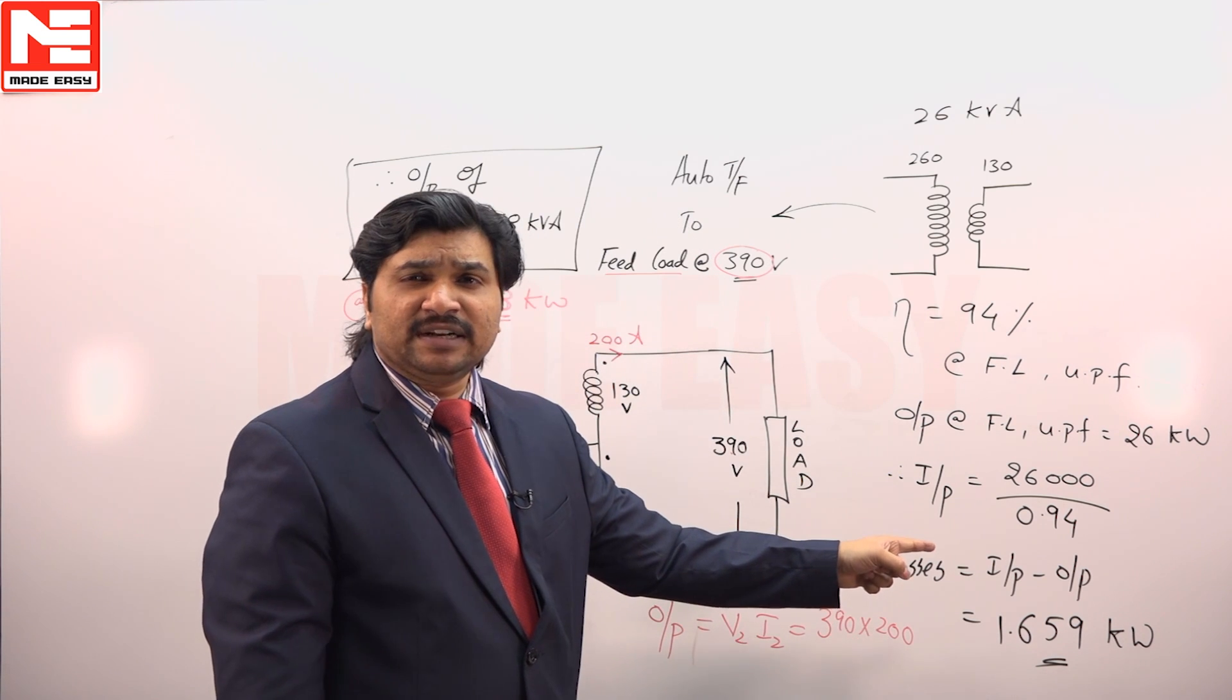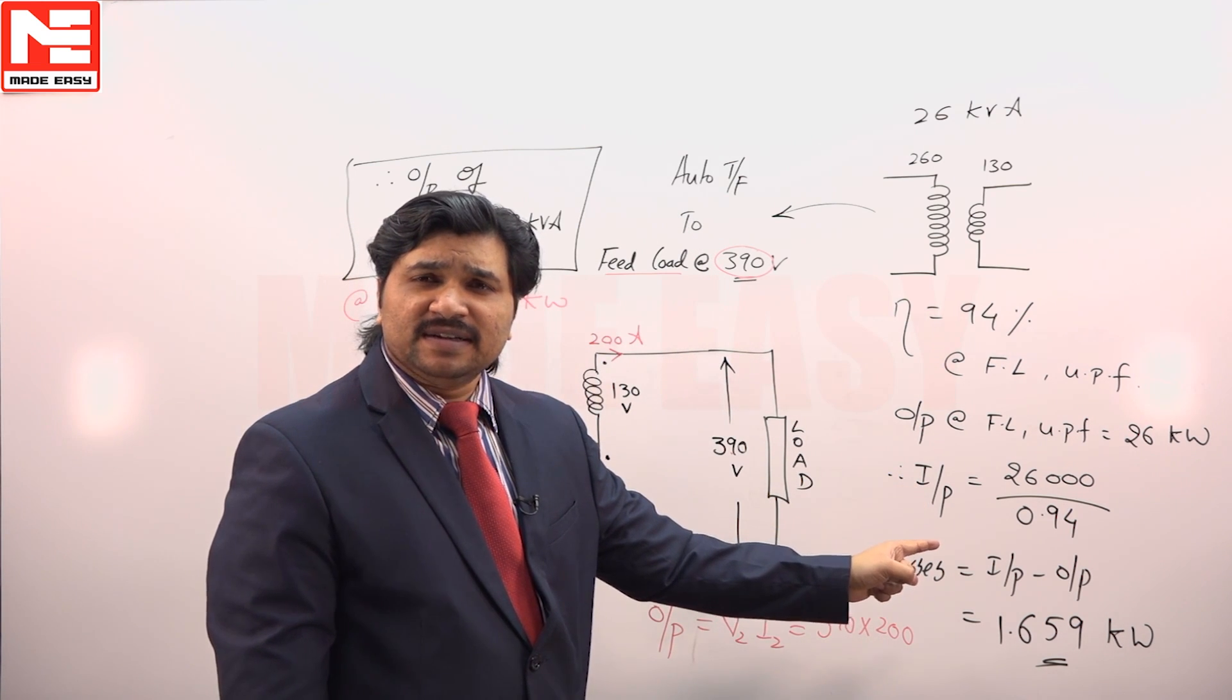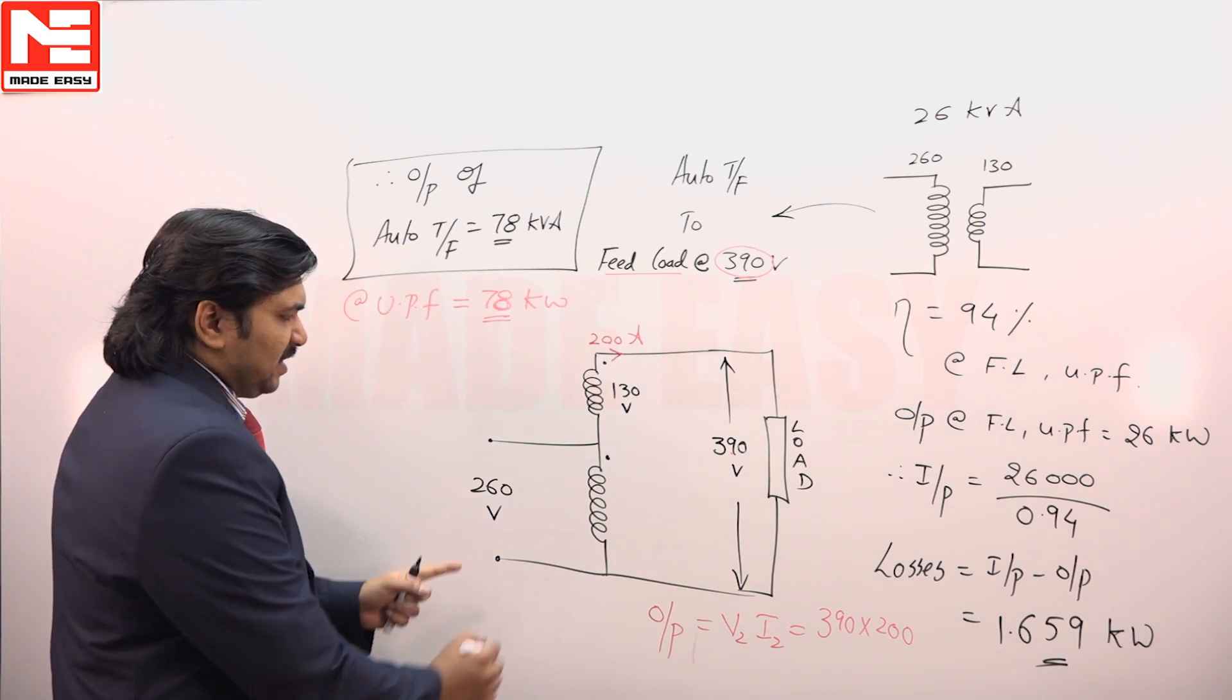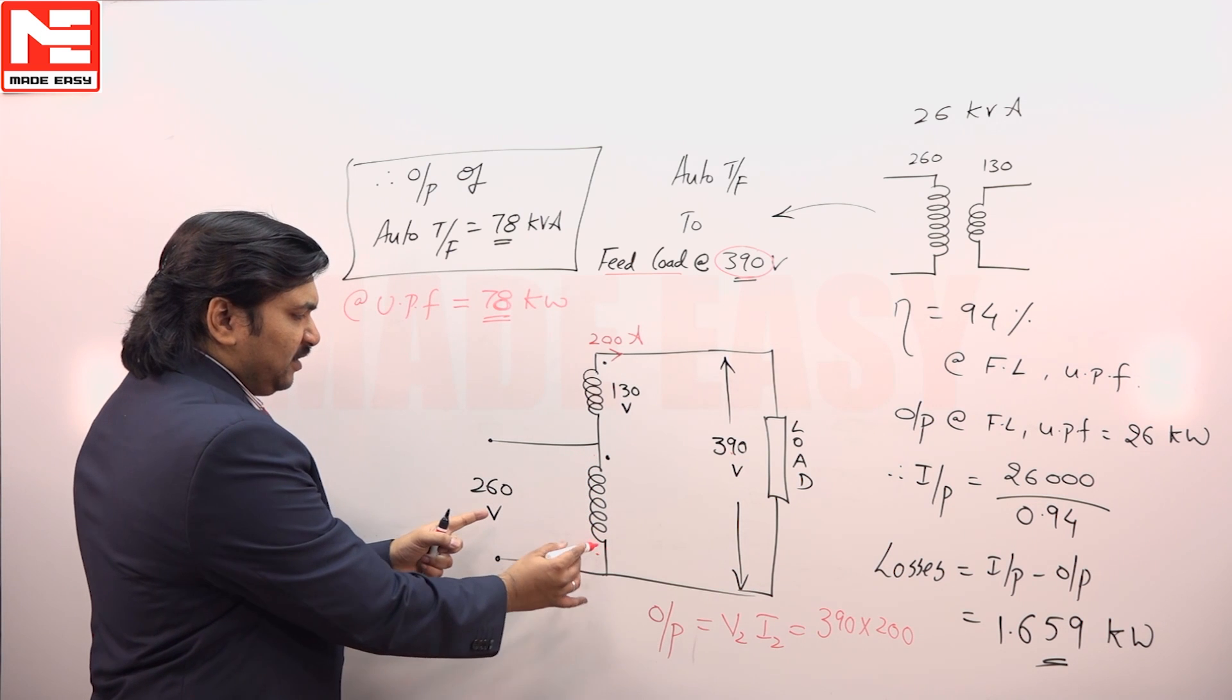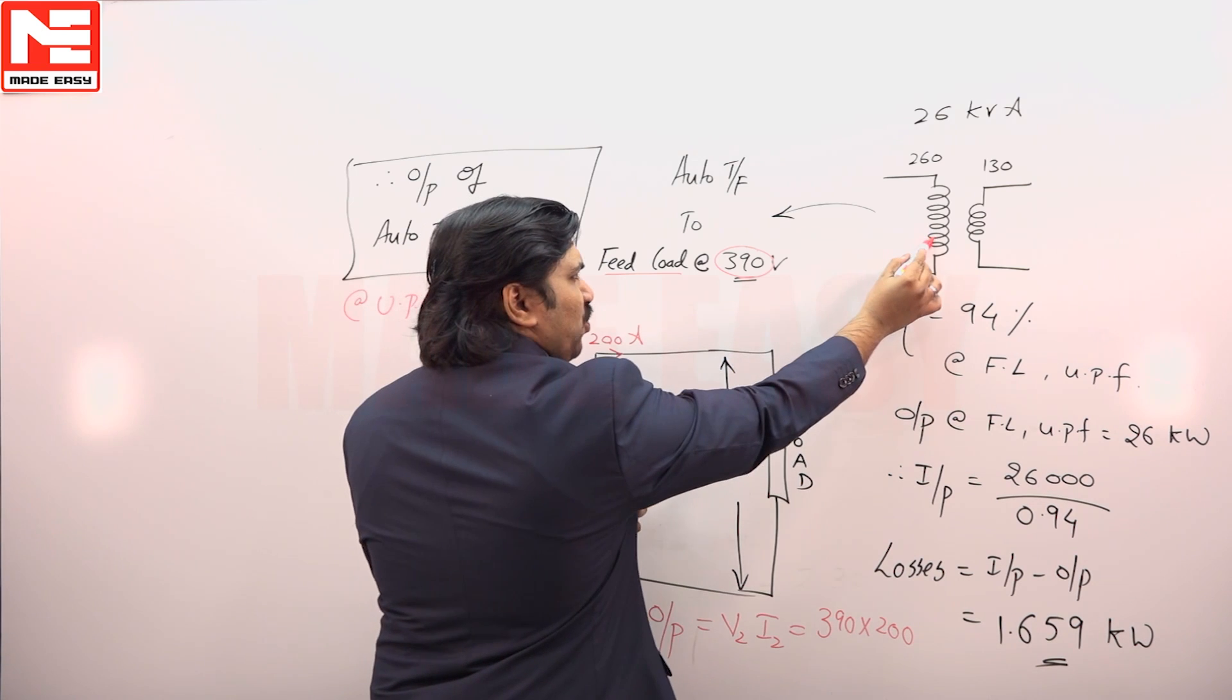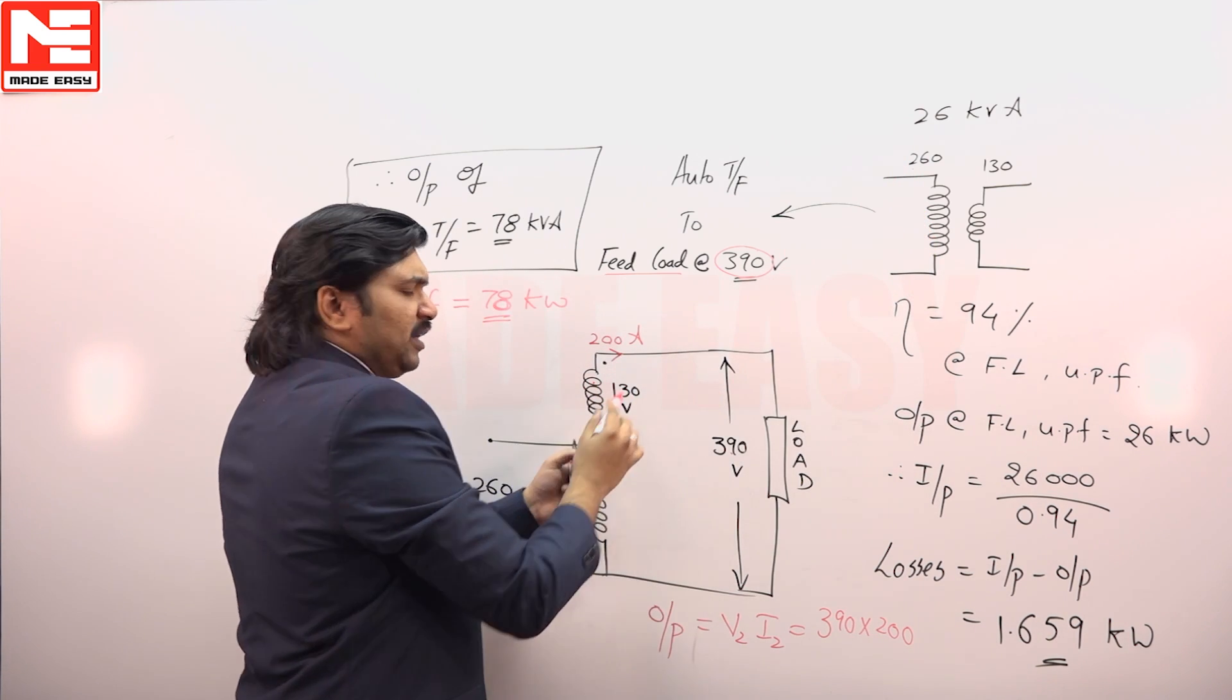The losses of two winding transformer can be taken as losses for auto transformer. Why? The reason is this is the voltage rating. Normally this is a two winding transformer previously. This winding voltage rating is 260, this winding voltage rating is 130.